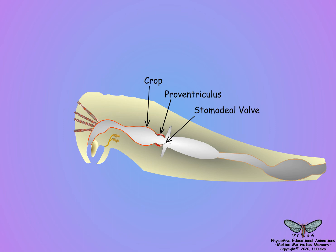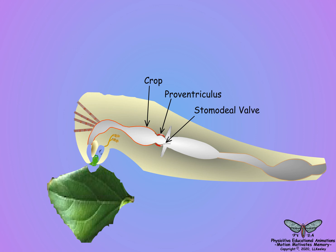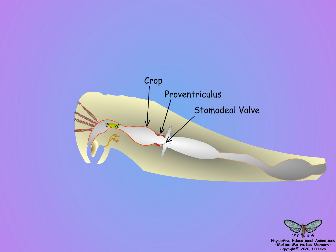To illustrate initial digestion, we shall follow a bolus of food through the foregut into the midgut. Food and salivary enzymes pass through the mouth into the pharynx and esophagus to the crop, an enlarged area of the foregut for food storage.